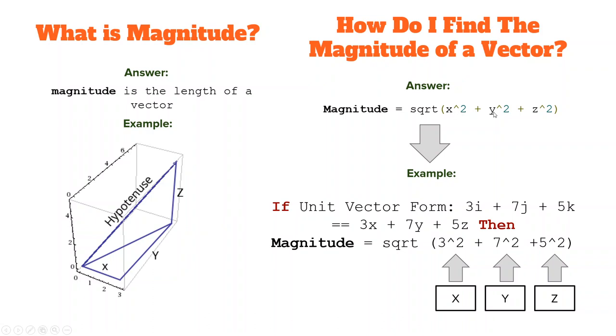An example would be if unit vector form is 3i plus 7j plus 5k, and that is equivalent to 3x plus 7y plus 5z, then the magnitude is equal to the square root of 3 squared plus 7 squared plus 5 squared, and that is our x, y, and z.